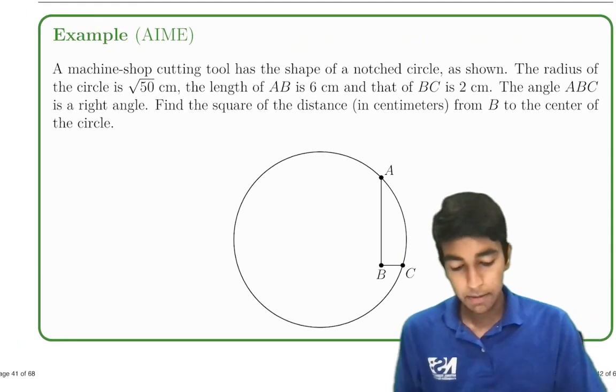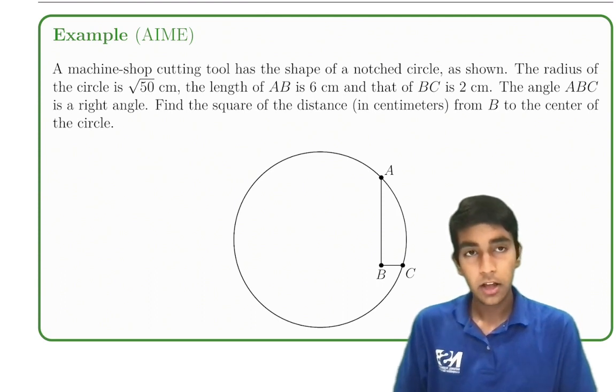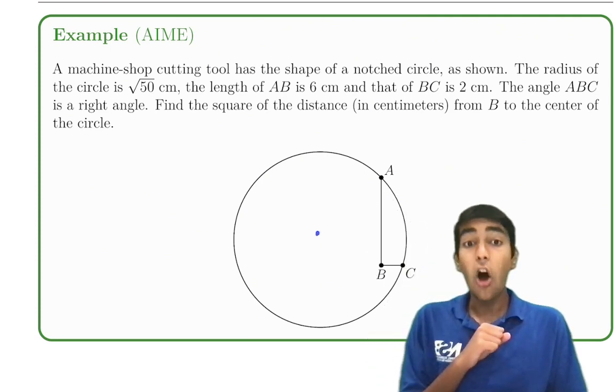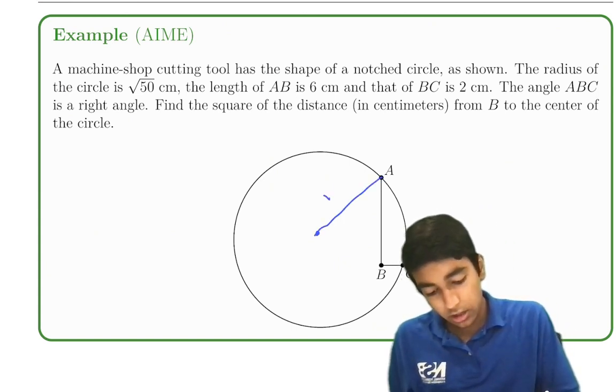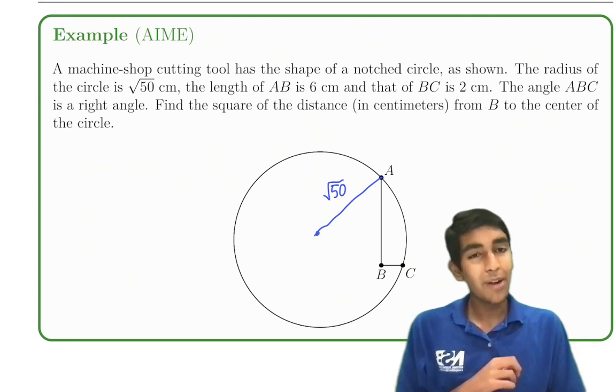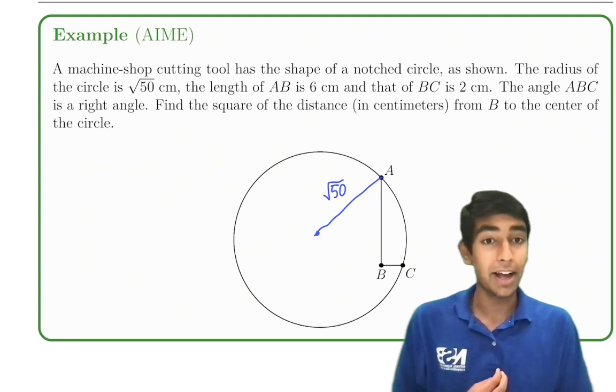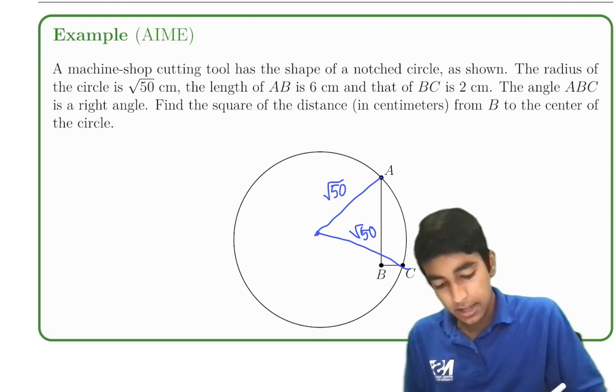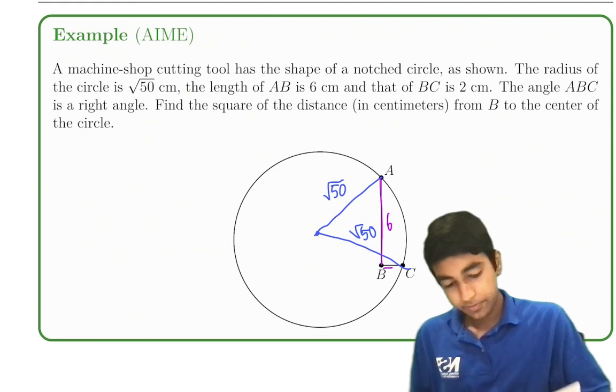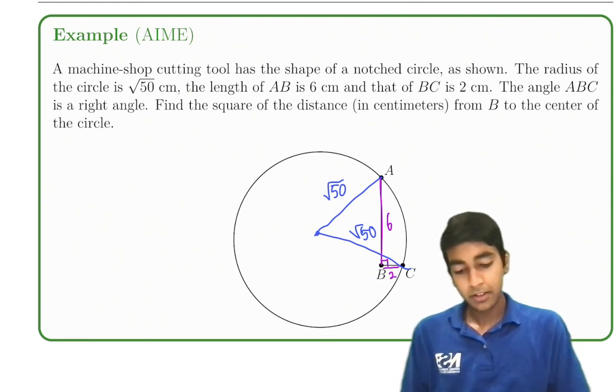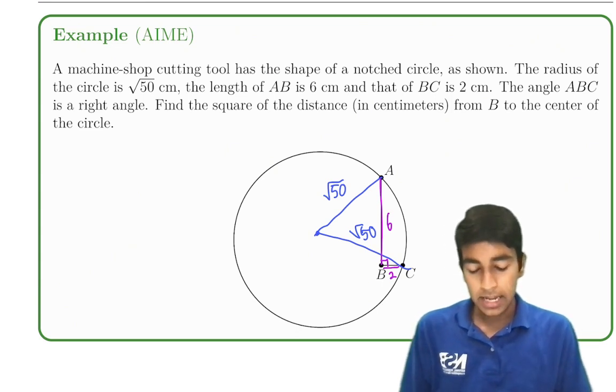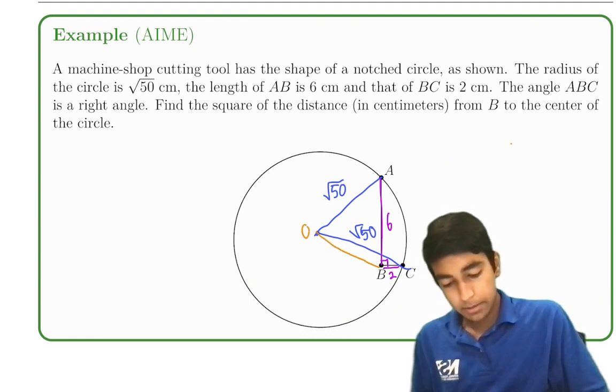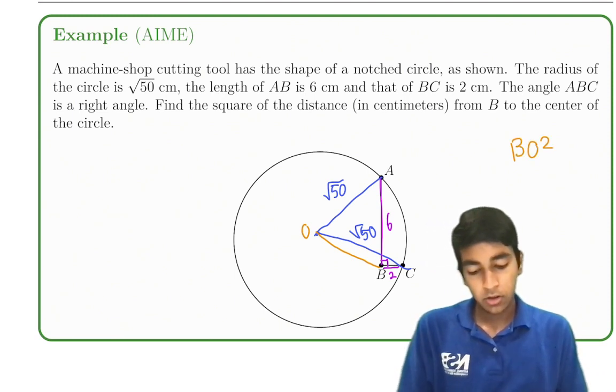A machine cutting tool has a shape of a notched circle, as shown. The radius of the circle is square root 50 centimeters. So center here and draw all important radii. We're always going to do that in every single circle problem. Because by not drawing a radius, you could be one radius away from solving the problem, or improving your score by 6 points. So square root 50, square root 50. The length of AB is 6. And BC is 2. The angle ABC is a right angle. Find the square of the distance in centimeters from B to the center of the circle. So this is the center. Find BO squared.